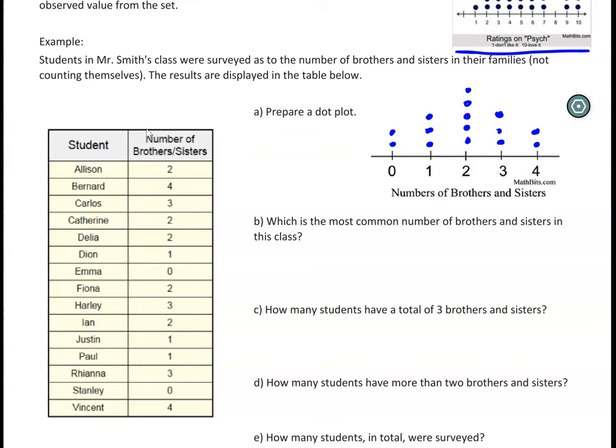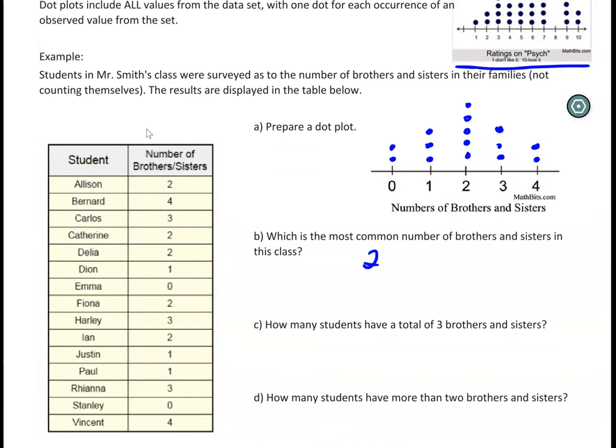So there's always follow-up questions to these. What is the most common number of brothers and sisters? We're just looking for which one of these numbers has the most dots. So that's going to be two. How many students have a total of three brothers or sisters? So we look in the column here with three. That's going to be three.